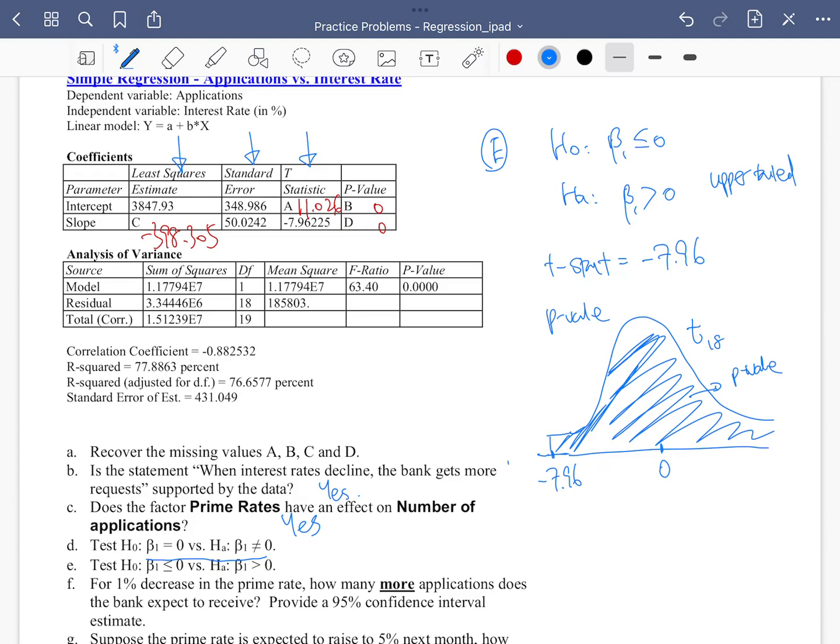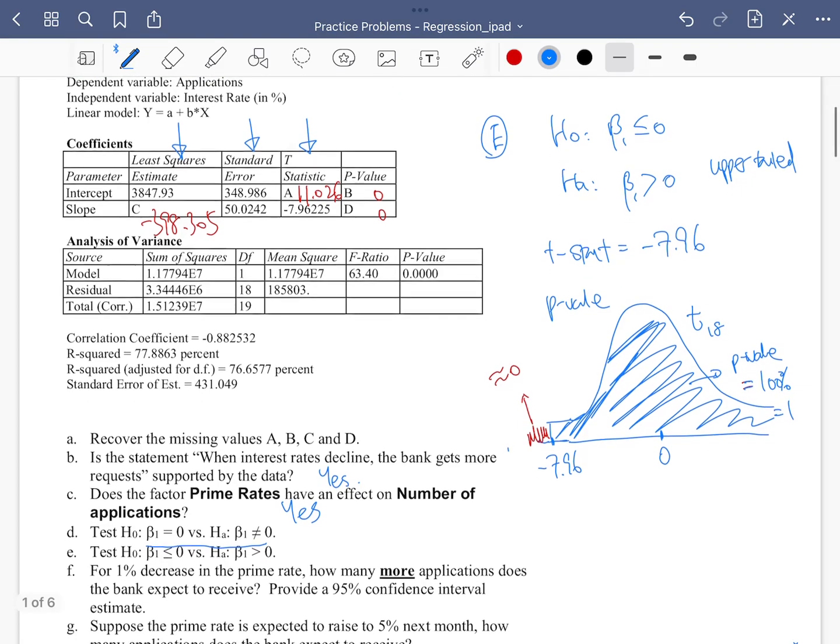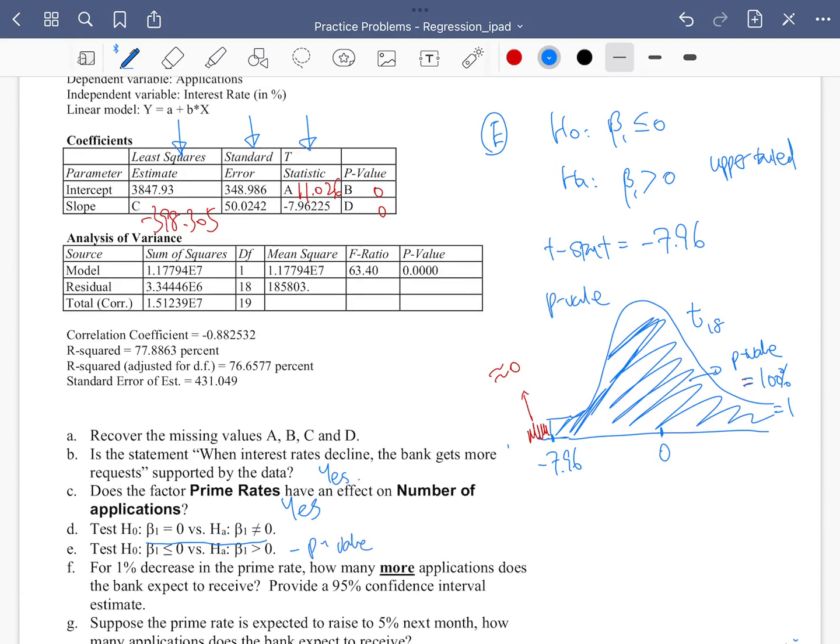What we know from earlier is we know the corner to the left of negative 7.96 is close to 0. If you know this part is very small, close to 0, what's the area to the right? Well, that's going to be 1 minus 0. So that means this p-value is actually close to 100% or 1. So the p-value is close to 1. And in that case, you do not reject the null. You don't have enough evidence to reject the null, and you conclude beta 1 is less than or equal to 0.